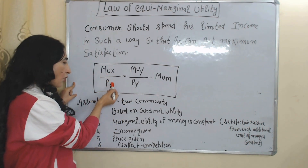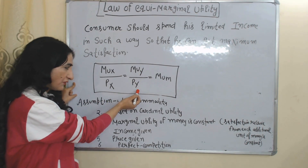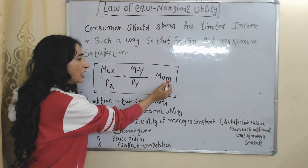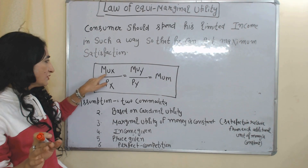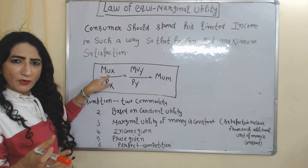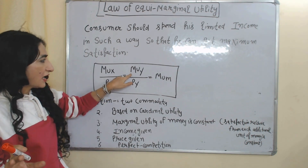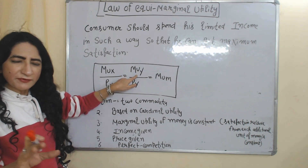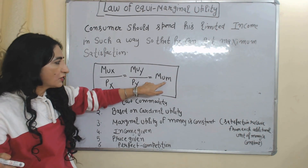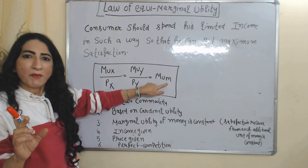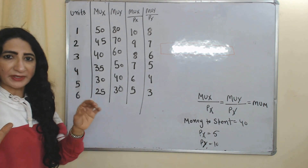The most important condition of consumer equilibrium according to this law is: MUX over PX should equal MUY over PY, which should equal MUM. Here MUX means marginal utility from good X, PX means price of good X, MUY means marginal utility from good Y, PY means price of good Y, and MUM means the constant marginal utility of money. Now we understand this law with the help of an example.